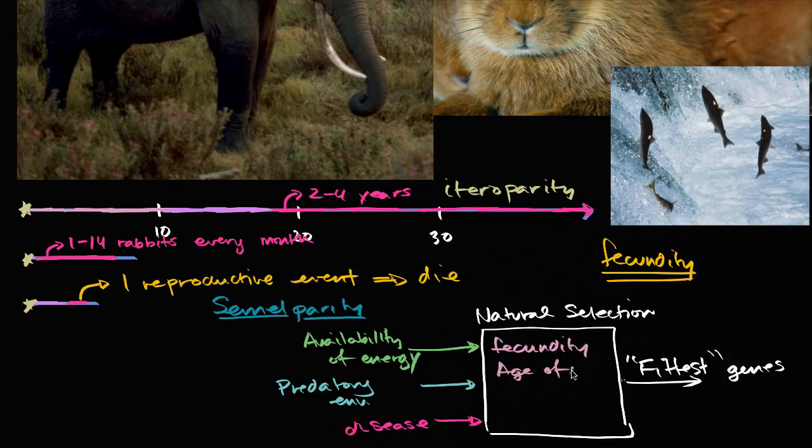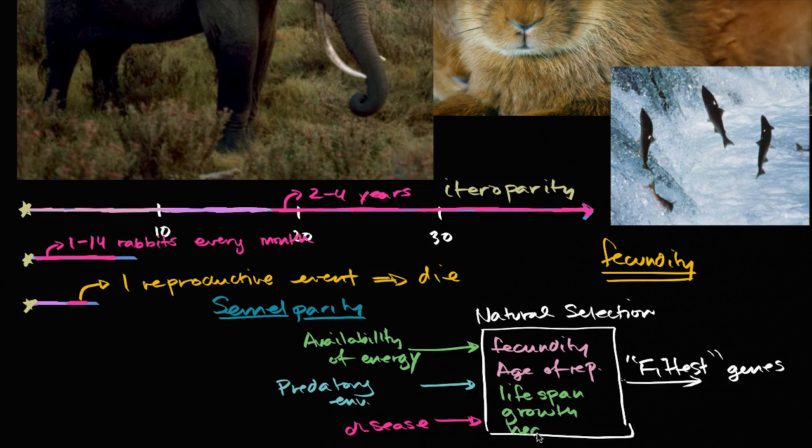Age of reproduction. Things like lifespan, and these are all related in some way. Lifespan. Growth. And a species, and an organism, is making trade-offs all of the time.